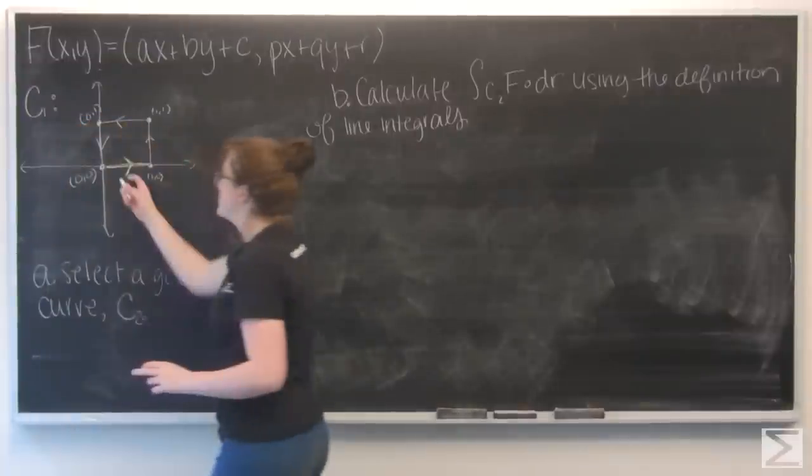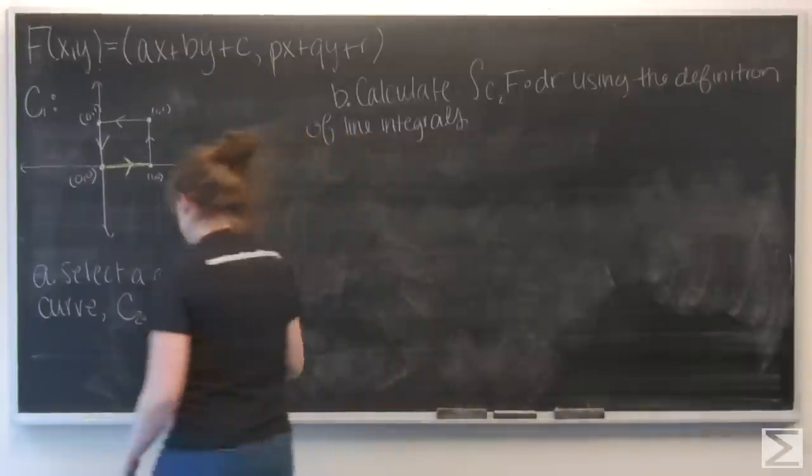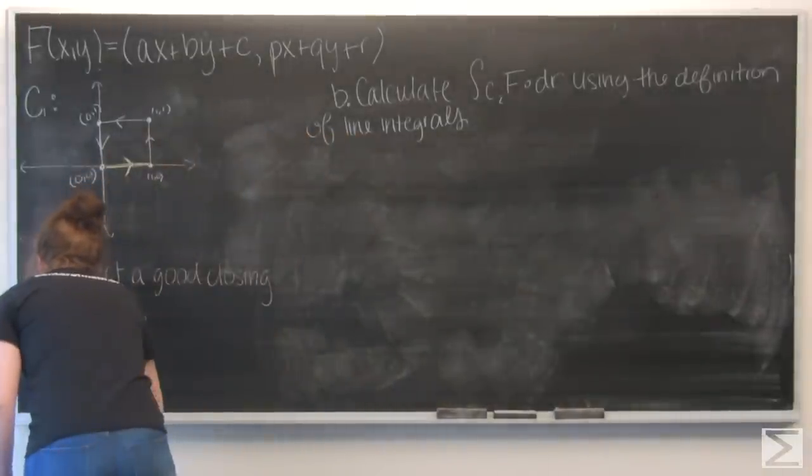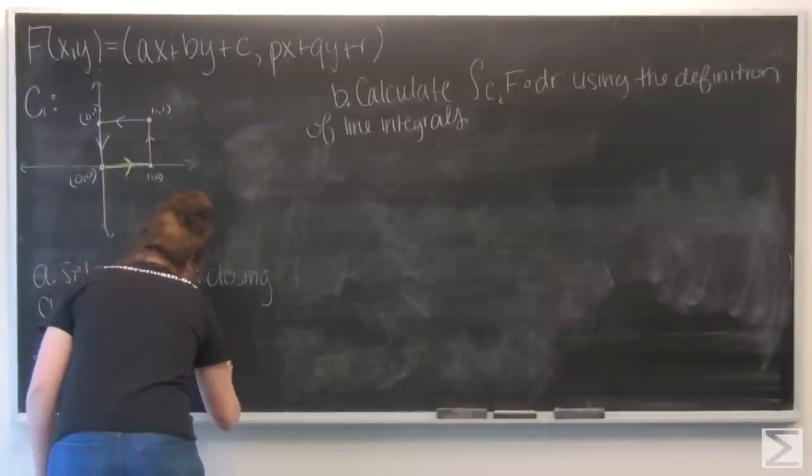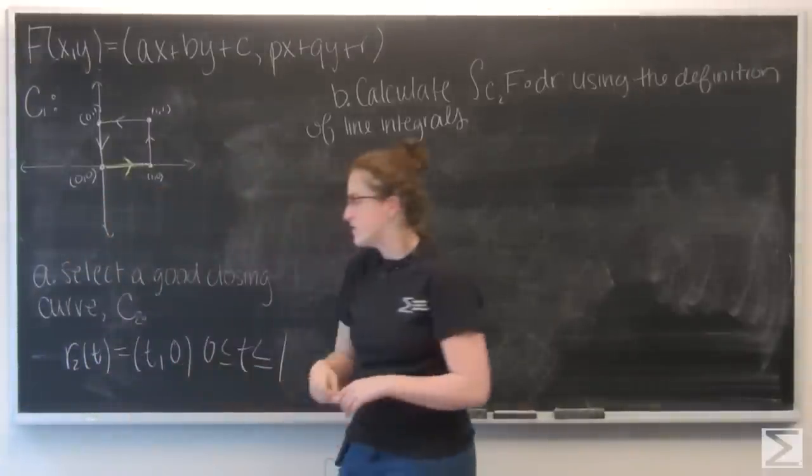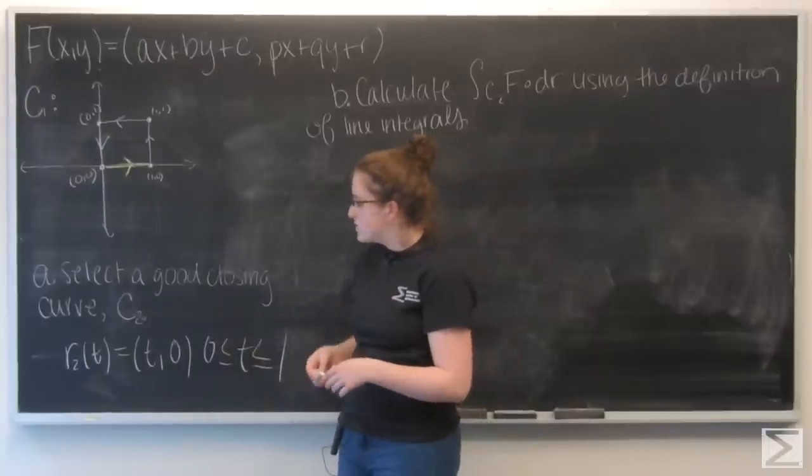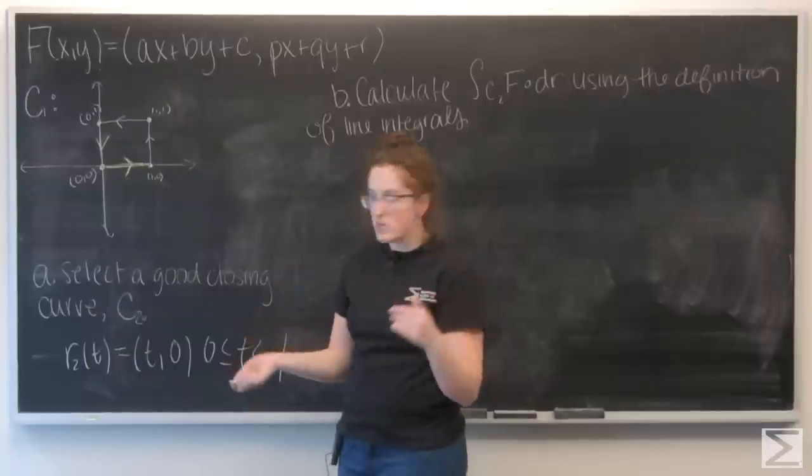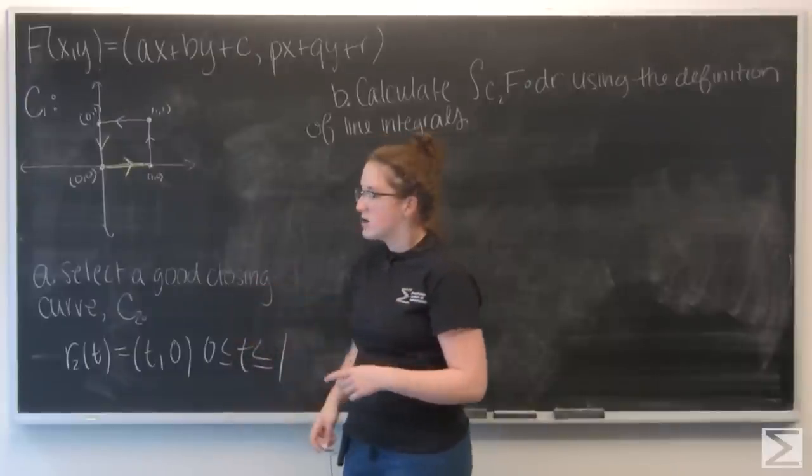This yellow section is what I'm adding in, and I'm going to define it using the parametrization R2, and that's (t, 0) for t between 0 and 1. So that's my answer for part A.